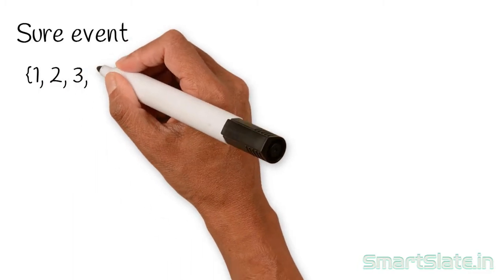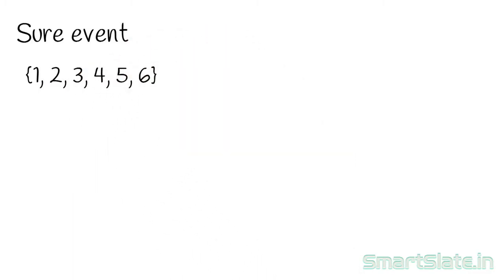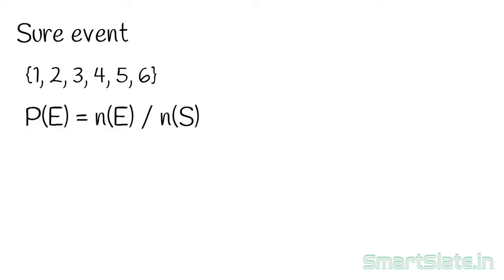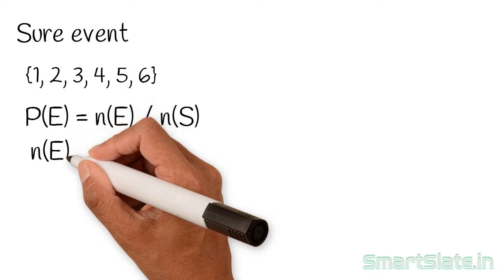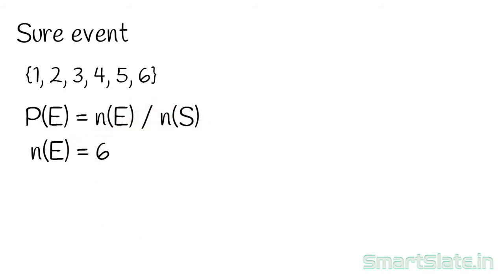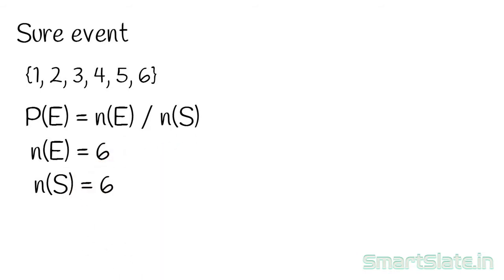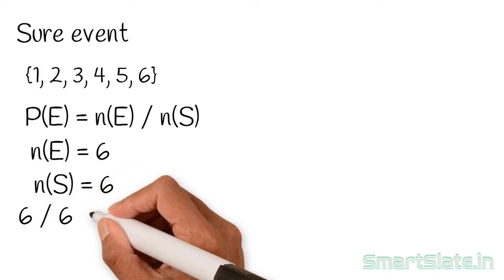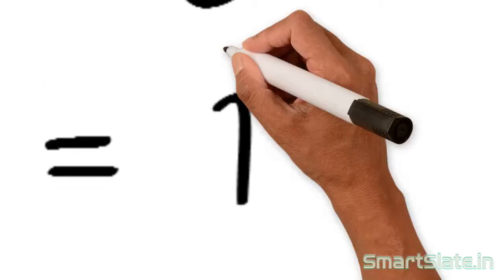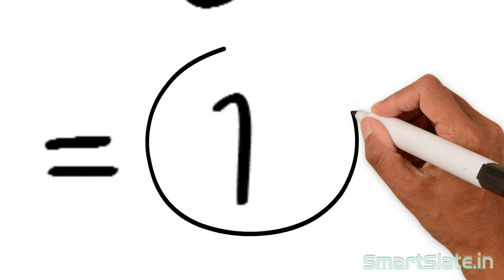Getting a natural number is a sure event because all elementary events in the sample space satisfy the condition of being a natural number. The number of events favoring the condition is 6, and the total number of elementary events in the sample space is also 6. Hence, the probability is 6/6 = 1. Note: the probability of a sure event is always 1.